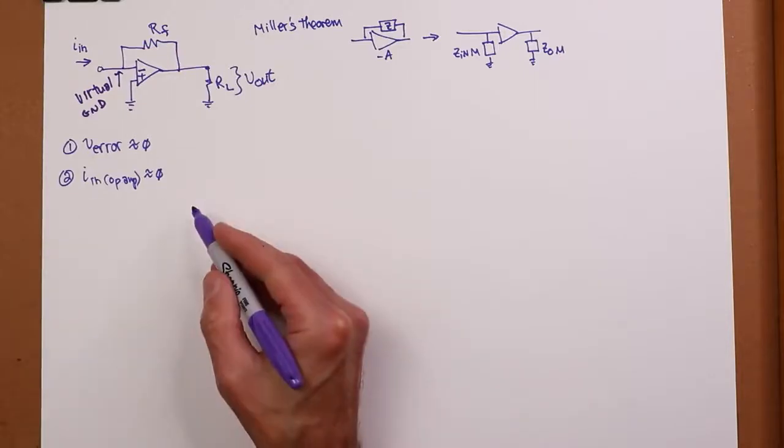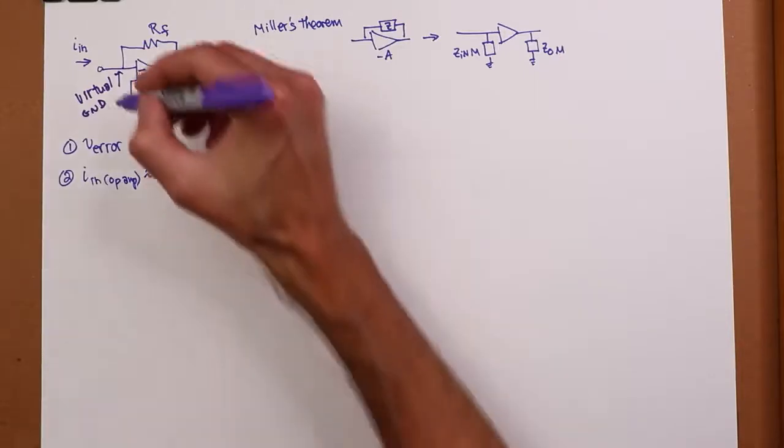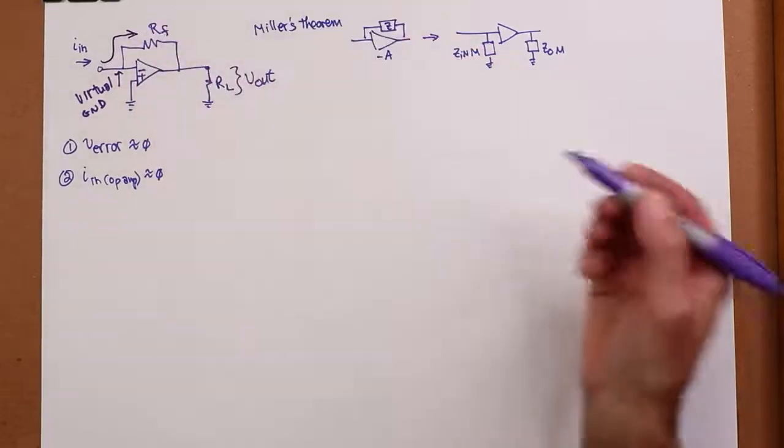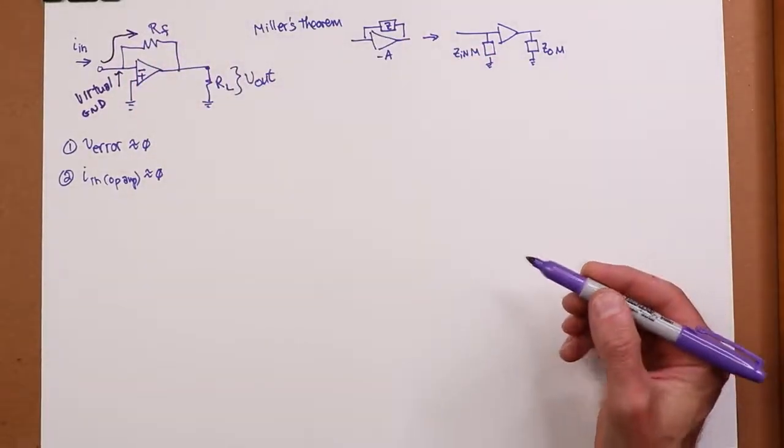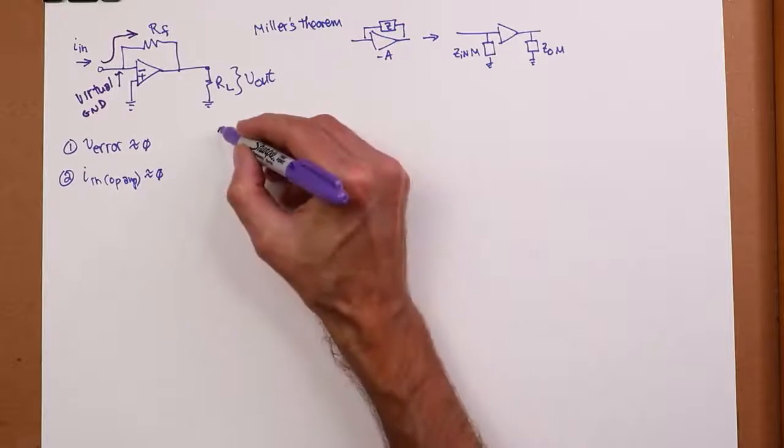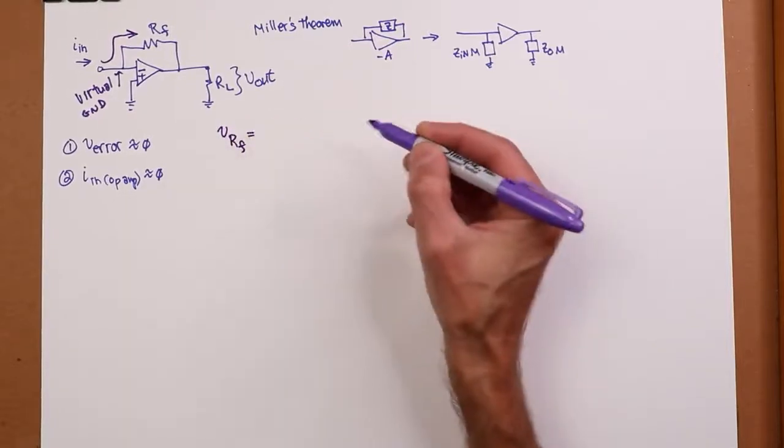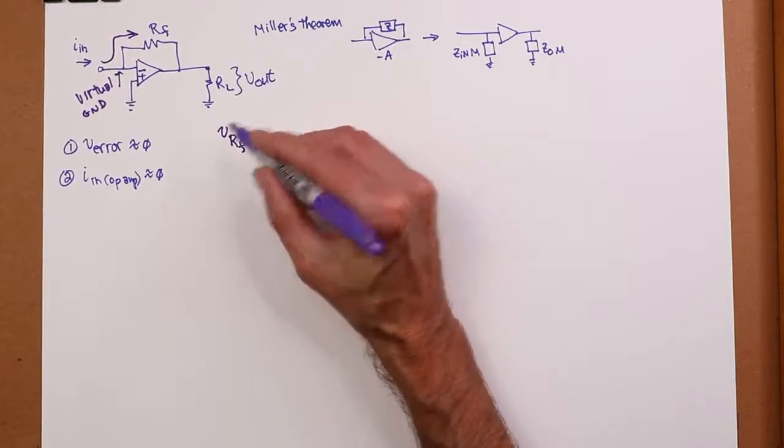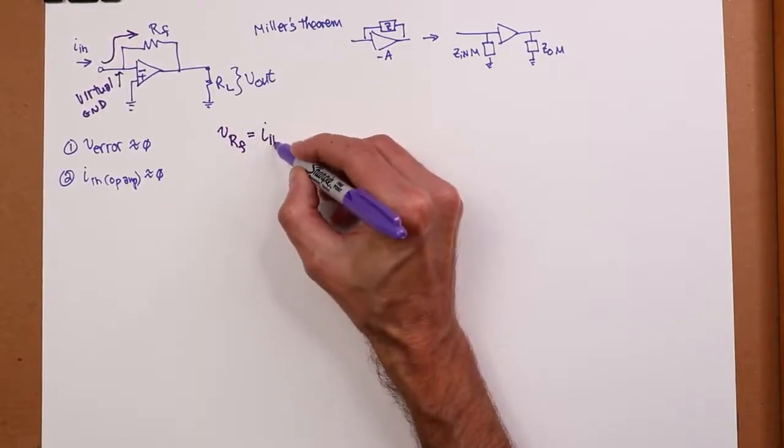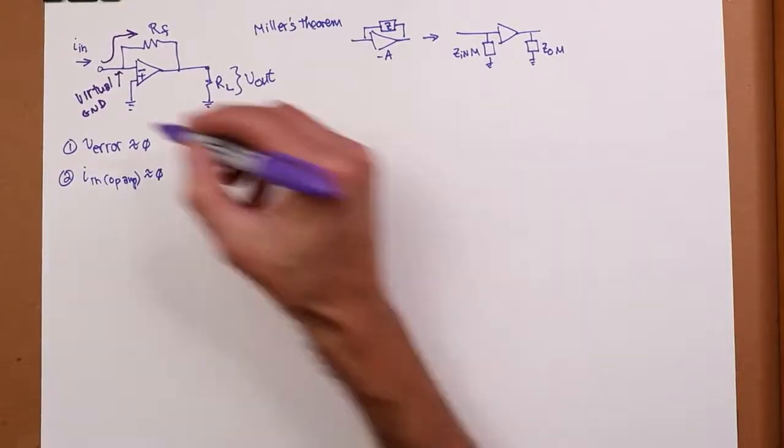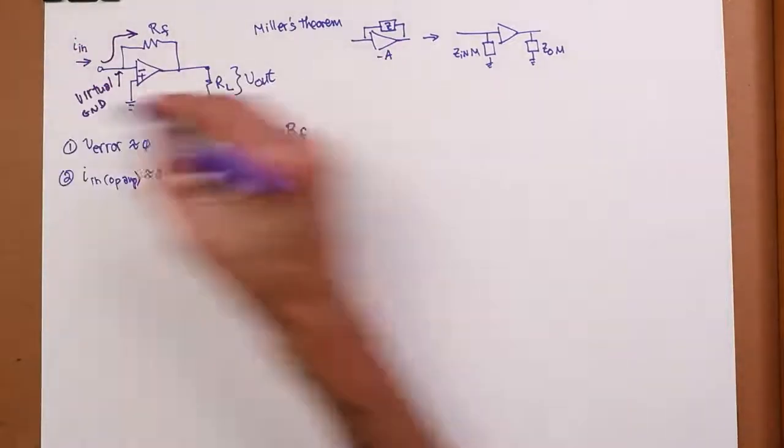Now, if the input current in the op amp is zero, then all of this IN has to go this way. It has to go through RF. And that means that the voltage across RF is going to equal that input current times RF. It's just Ohm's Law.